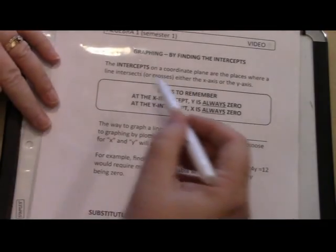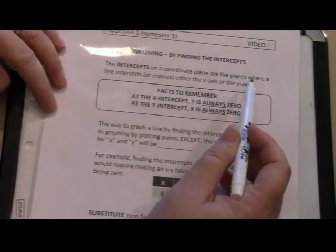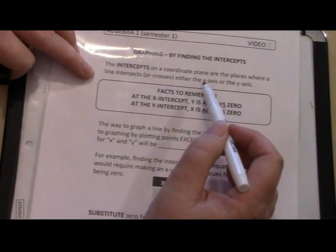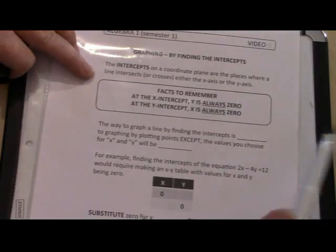If you take a look at page 31, the intercepts on a coordinate plane are the places where a line intersects or crosses either the x-axis or the y-axis.